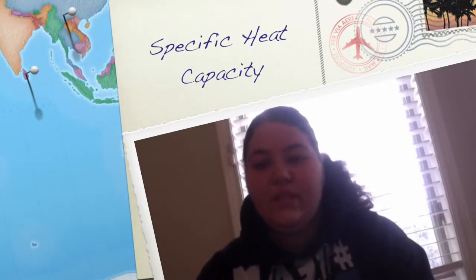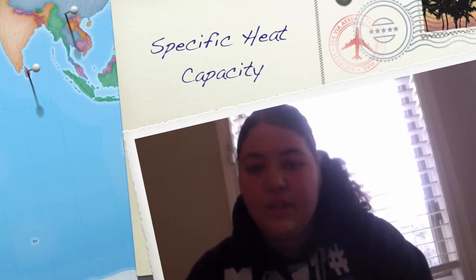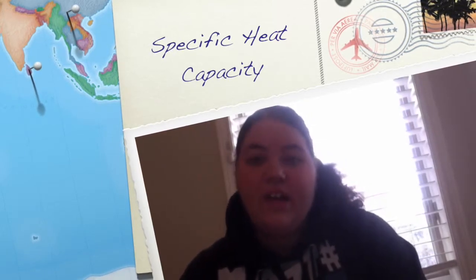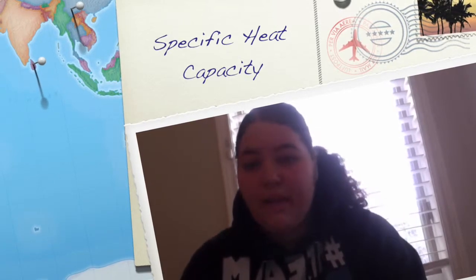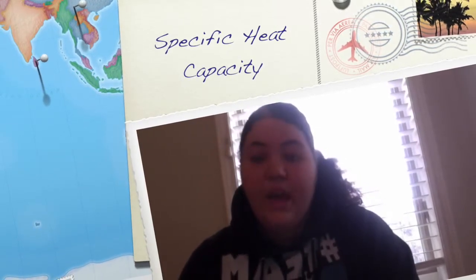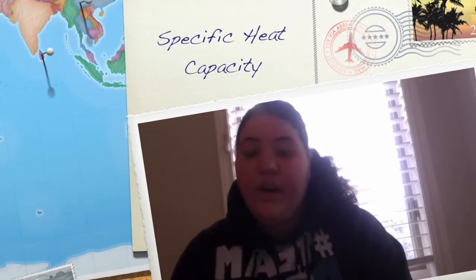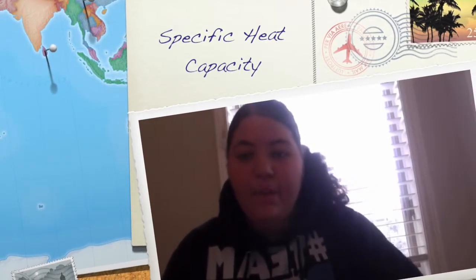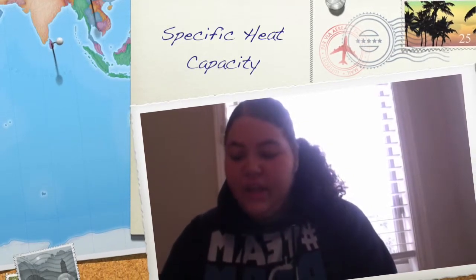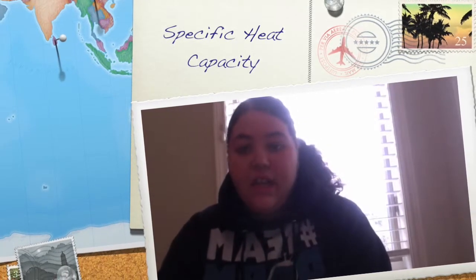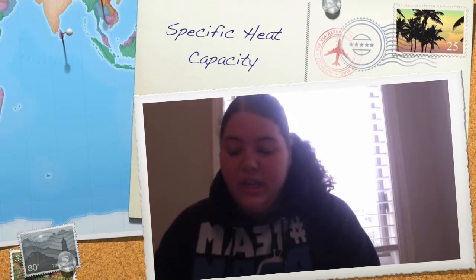A specific heat capacity of a substance is the amount of heat energy it takes to raise one gram of the substance by one degree Celsius. For cooking, it is not only important to know how to cook the food, but also what to cook it in. To bake the macaroni and cheese, we first had to boil the noodles in hot water. To boil the water, we used a metal pot. As the stovetop heated up the pot, the heat spread quickly because the specific heat capacity is lower, which means it doesn't take as much heat energy to heat it up.